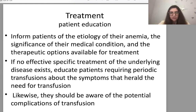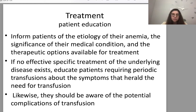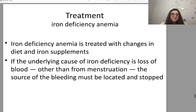Treatment usually starts with lifestyle modification and patient education. This includes information on the etiology of their anemia, the significance of their medical condition, and therapeutic options available. If no effective specific treatment of the underlying disease exists, educate patients requiring periodic transfusions about the symptoms that herald the need for transfusion and the potential complications of transfusion. If the underlying cause of iron deficiency is blood loss other than menstruation, the source of bleeding must be located and stopped.